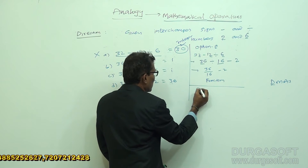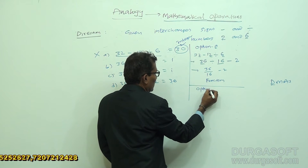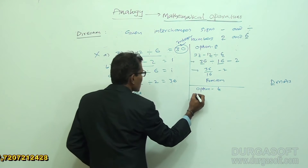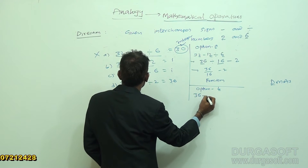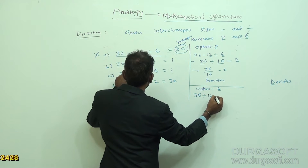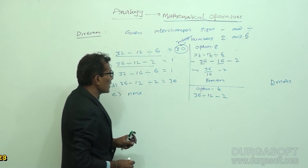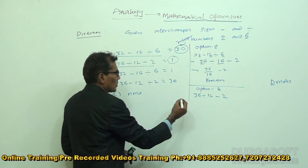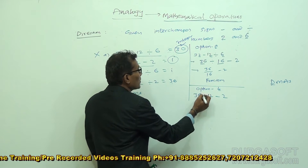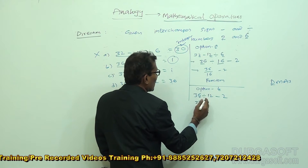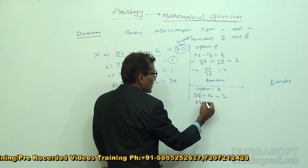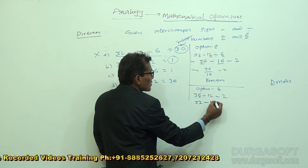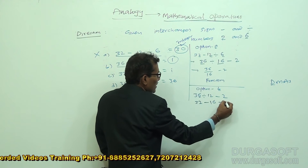Now we check option B. The LHS part of option B is 36 divided by 12 minus 2. The result should be 1 after following the instructions. Here, 3 stays as it is; 6 should be replaced by 2, and divided-by should be replaced by minus. In 12, 1 stays as it is; 2 should be exchanged by 6, and the minus 2 at the end must also be exchanged, with 2 replaced by 6.